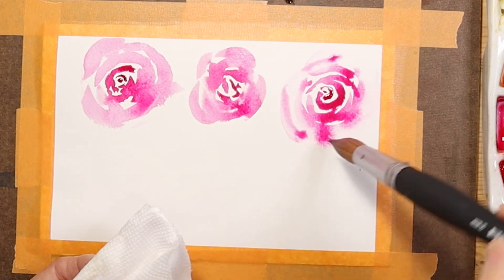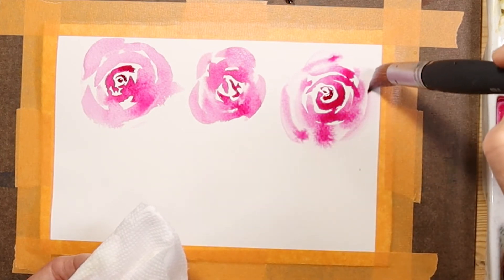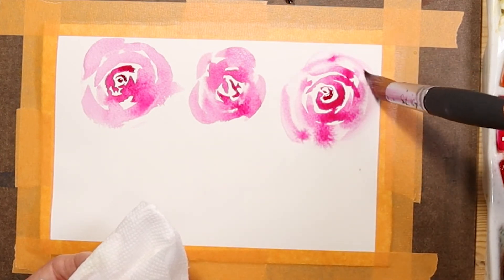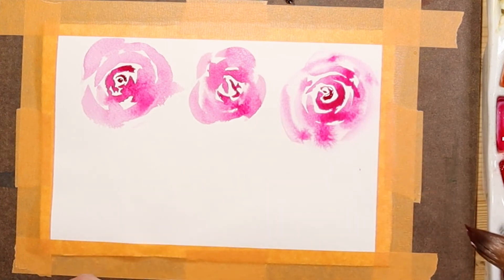And again, there you go. This is painting a delicate rose with a number 20 round Princeton Aqua Elite. Let's do it again. This is fun.